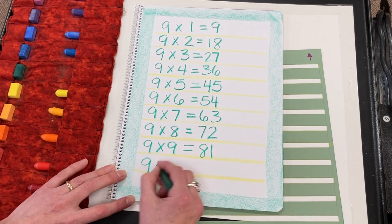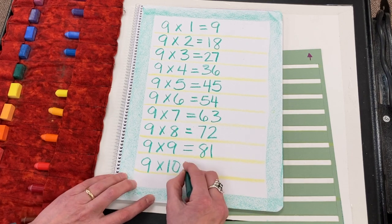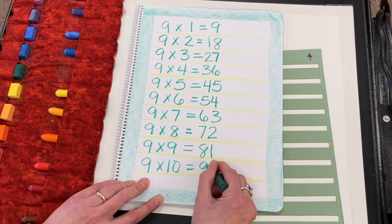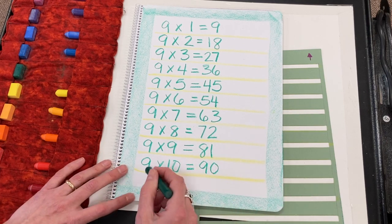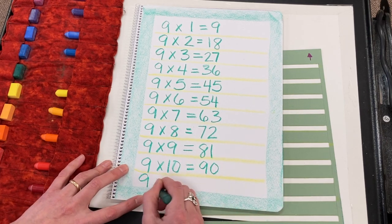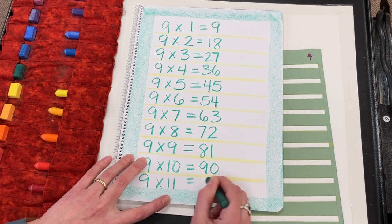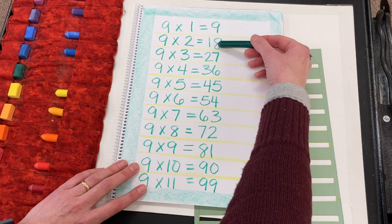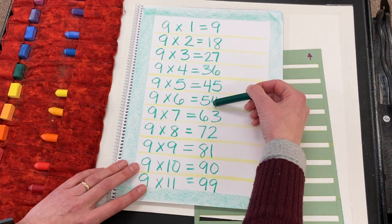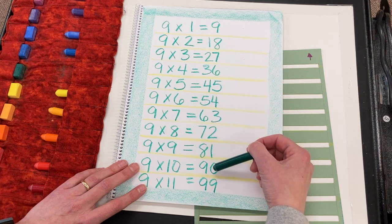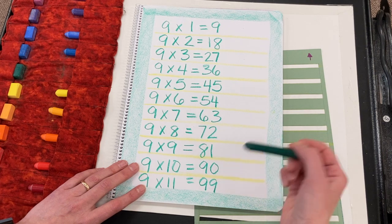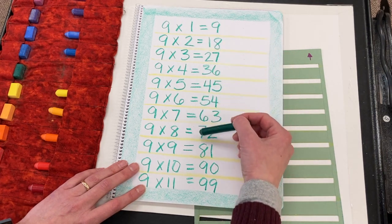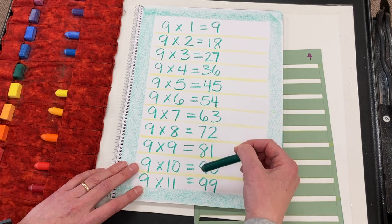Then we have 9×10. Is of course nine tens is 90. And one more nine is 99. So let's look at that pattern. We have 9, 8, 7, 6, 5, 4, 3, 2, 1, 0, 9. And over here we have 1, 2, 3, 4, 5, 6, 7, 8, 9, 9. And we went a lot farther with this pattern in our zoom meeting.